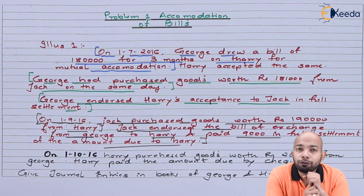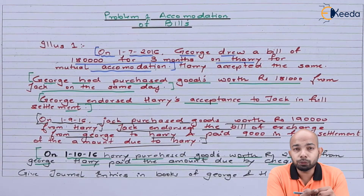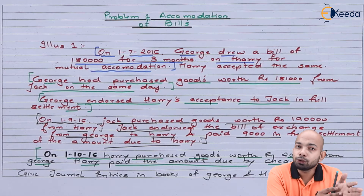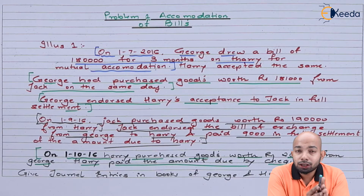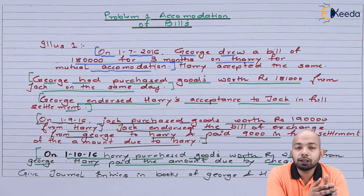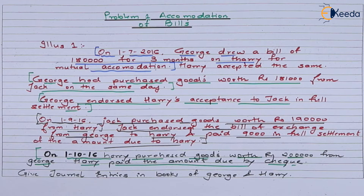Phase four: on 1st of October, Harry purchased certain goods from George worth 2 lakh and paid the balance due by cheque. We now need to pass journal entries for both George and Harry.